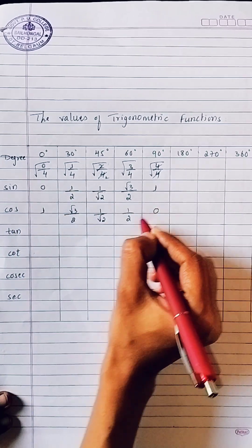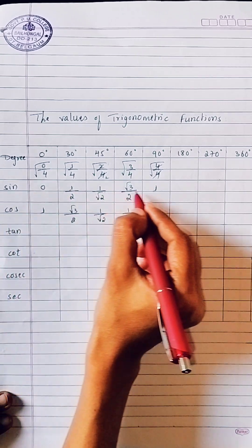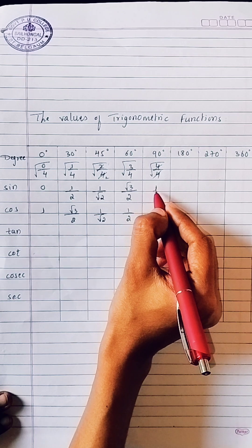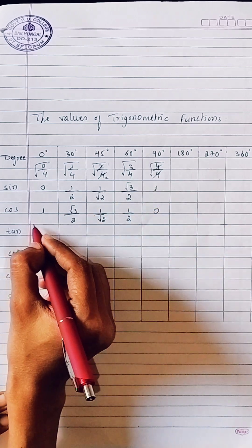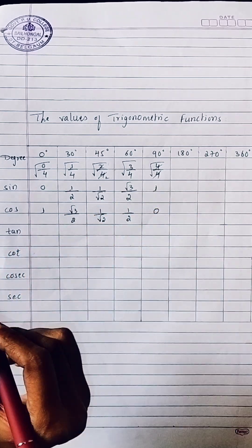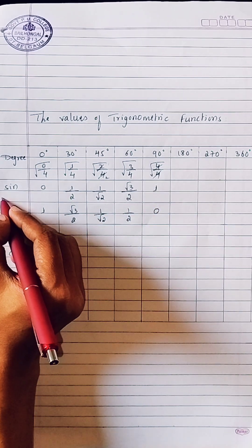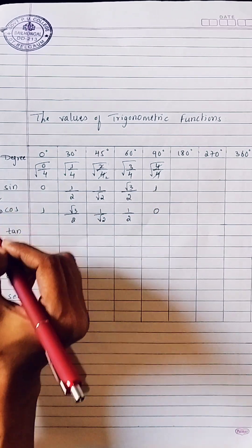The last one is zero. How did we get this value? We arranged it again going back from 90 to 0. This gives us the cos column.